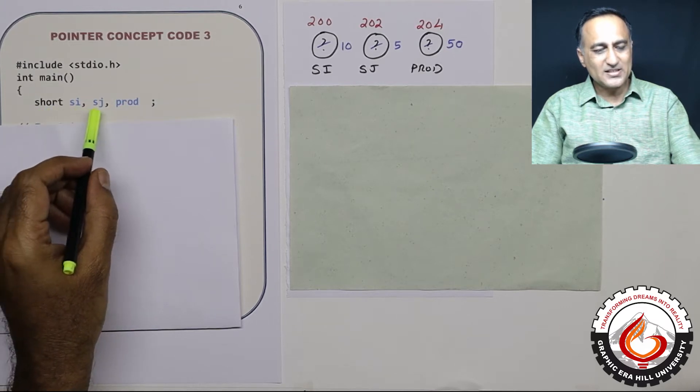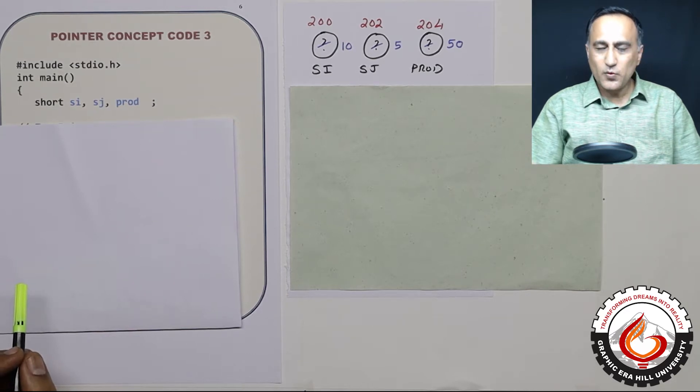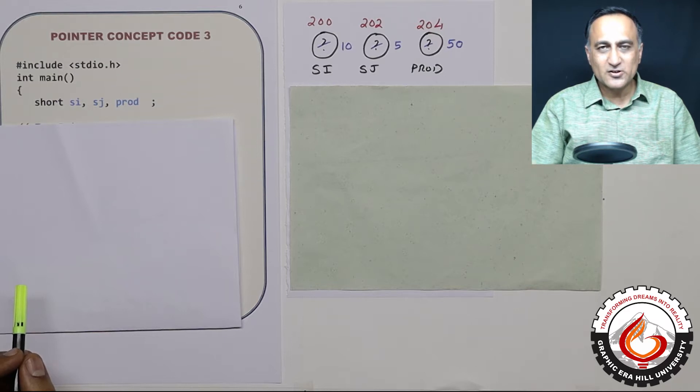So si, sj, and prod happen to be three short integers. And we are going with the assumption short integers occupy only two bytes of data.